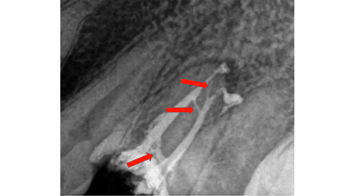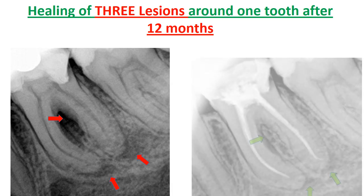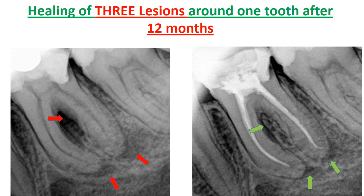This is a case with isthmuses in the apical, middle, and cervical areas. Due to the lateral pressure of the soft gutta-percha pushing the sealer, the filling reached these isthmuses. This is a case with three periapical lesions around a molar — Thermafil gives us three-dimensional obturation, the spaces are reduced, and good obturation is achieved.